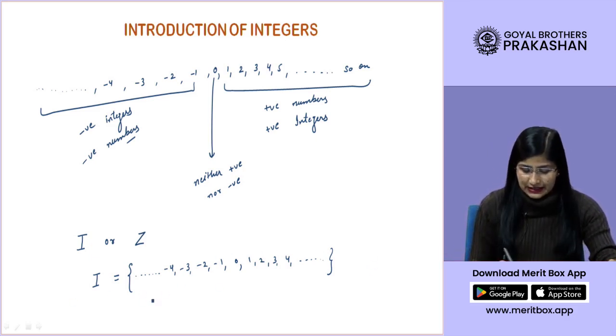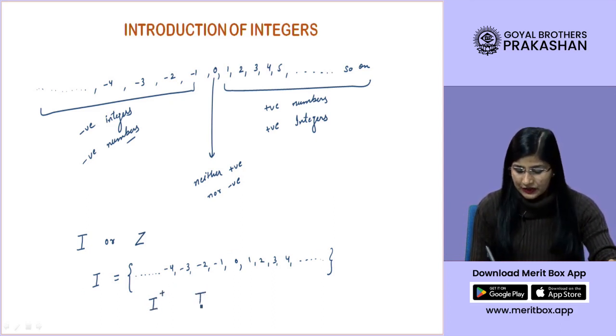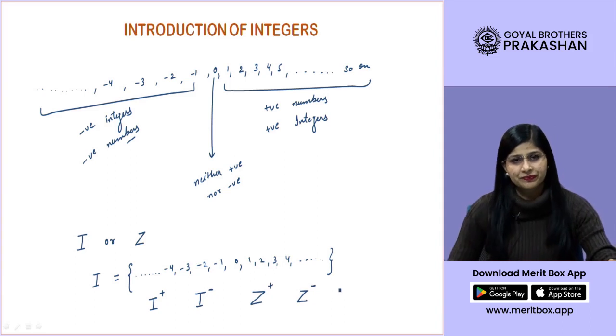The positive integers can be represented by I positive. The negative one can be represented by I negative or you can use the representation Z positive or Z negative.